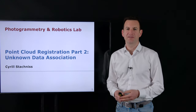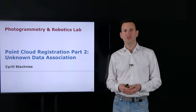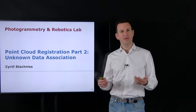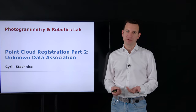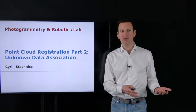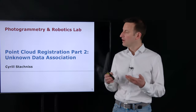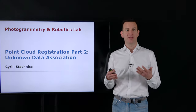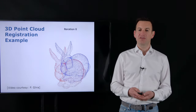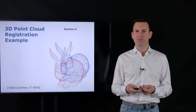Welcome to the second part of the lecture on the iterative closest point algorithm, looking into the registration of point clouds. Today we are looking into the realistic aspect of the problem where we have an unknown data association — we do not know precisely our correspondences. In the first part we looked into point cloud registration with given correspondences; now we look at how it works when correspondences are not given, leading us to a method that aligns two different point clouds.